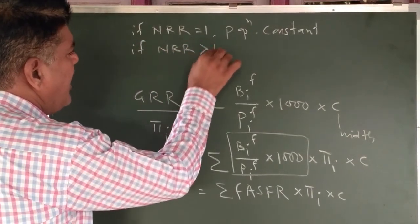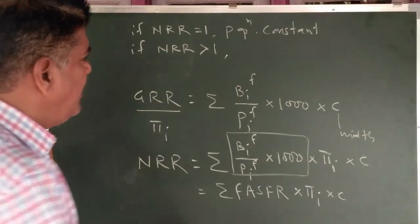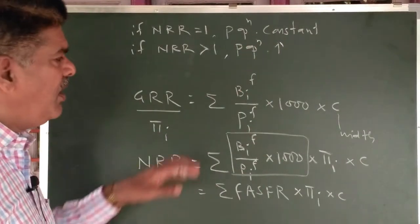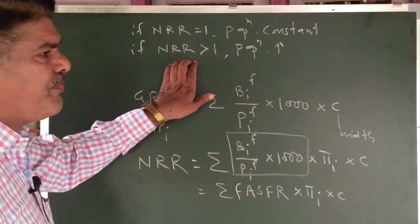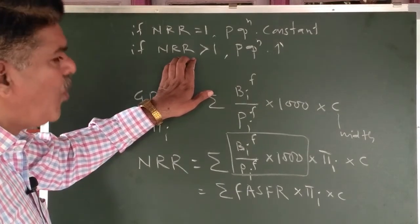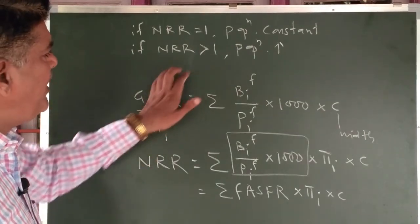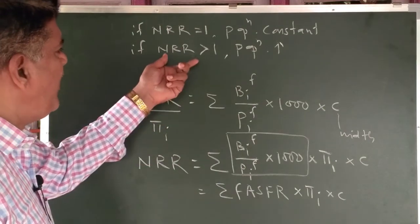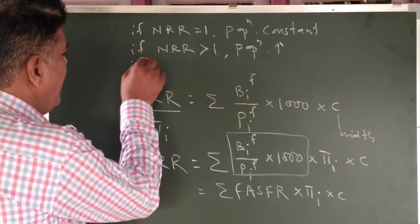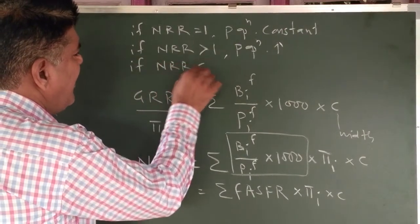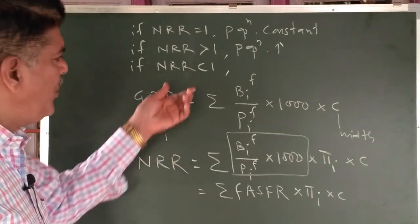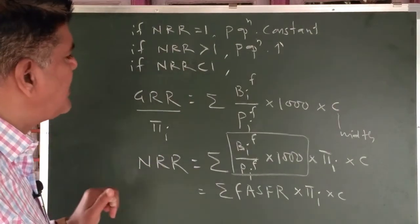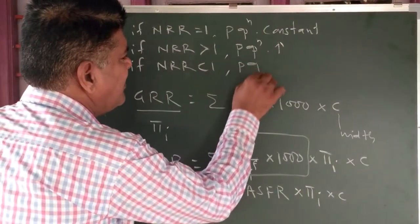If NRR is greater than 1, then the population is increasing. This means today's girls are more than today's mothers — the potential mothers are more than today's mothers. If NRR is less than 1, this means today's girls are fewer than today's mothers, so the population is decreasing.